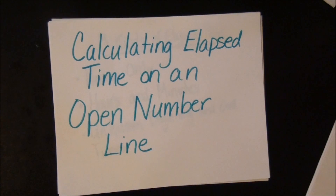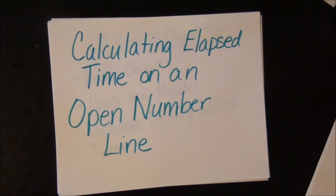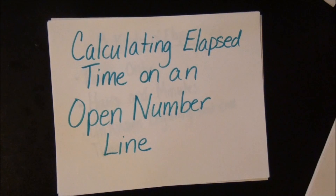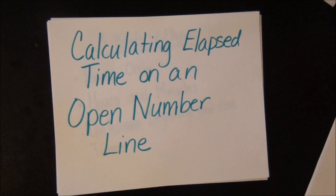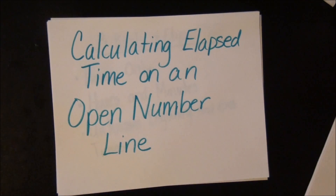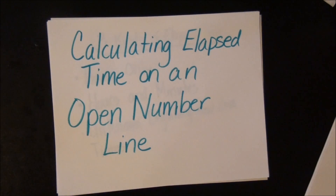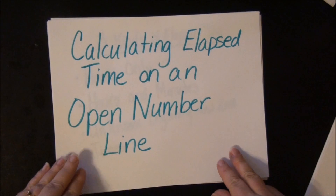In this lesson you will be learning how to calculate elapsed time on an open number line. Elapsed time means how much time has gone by, like how much time is between two particular times on the clock, or how long it's going to take you to get somewhere.